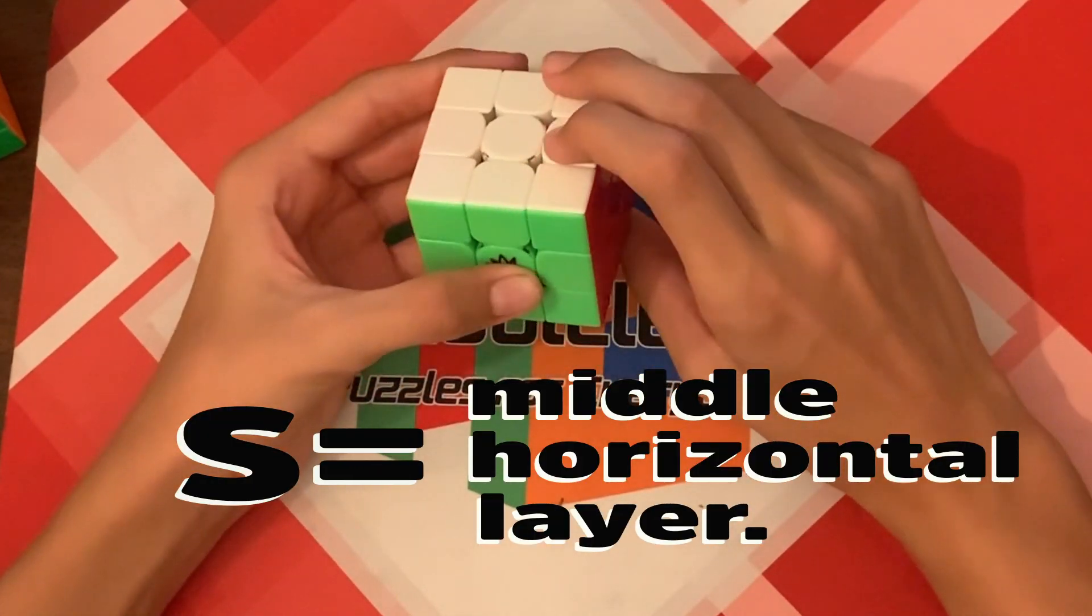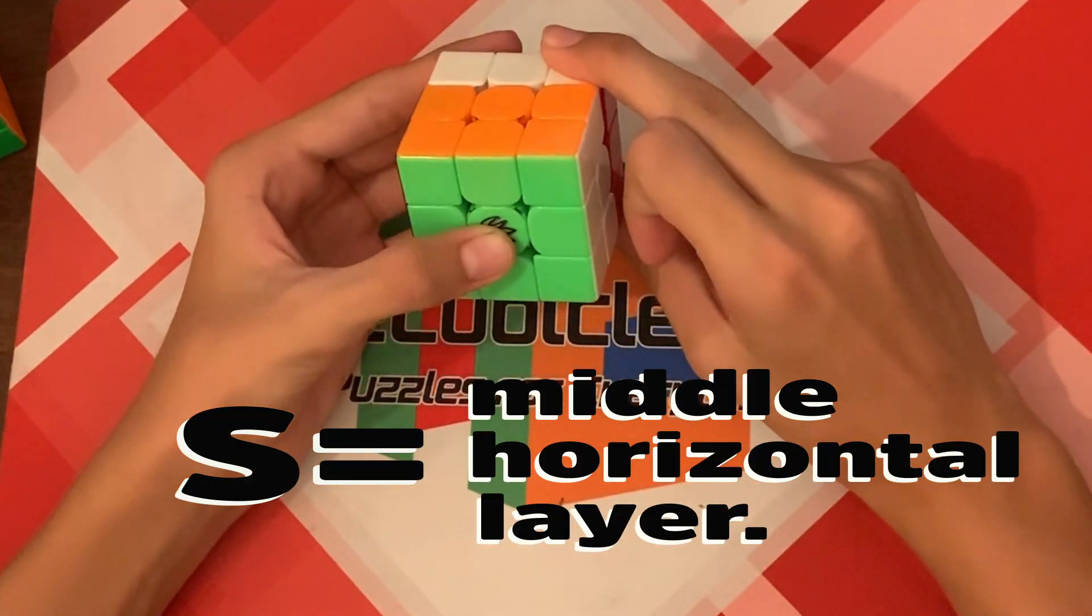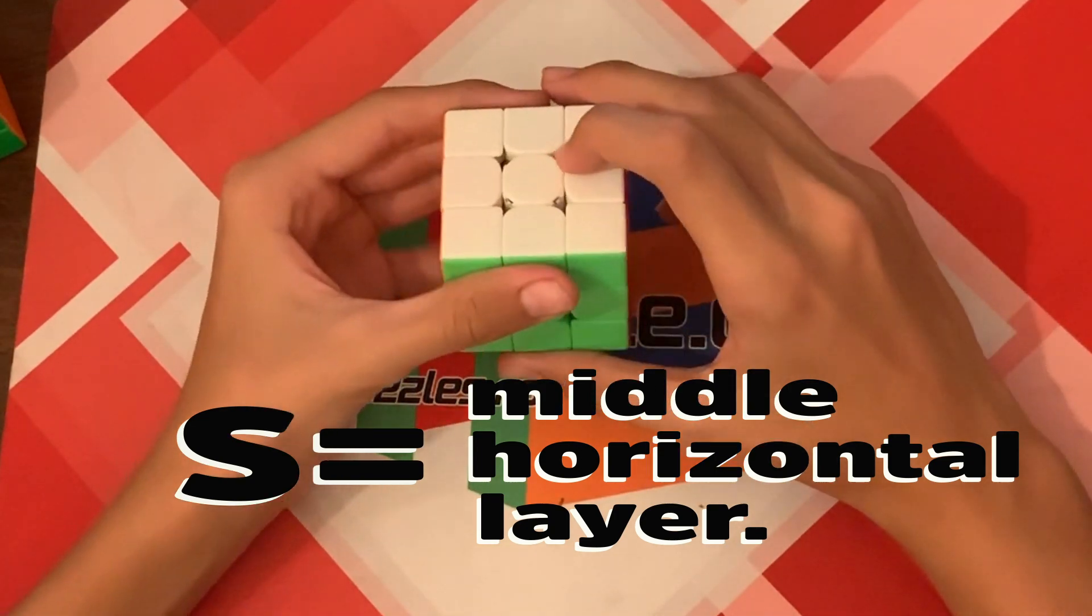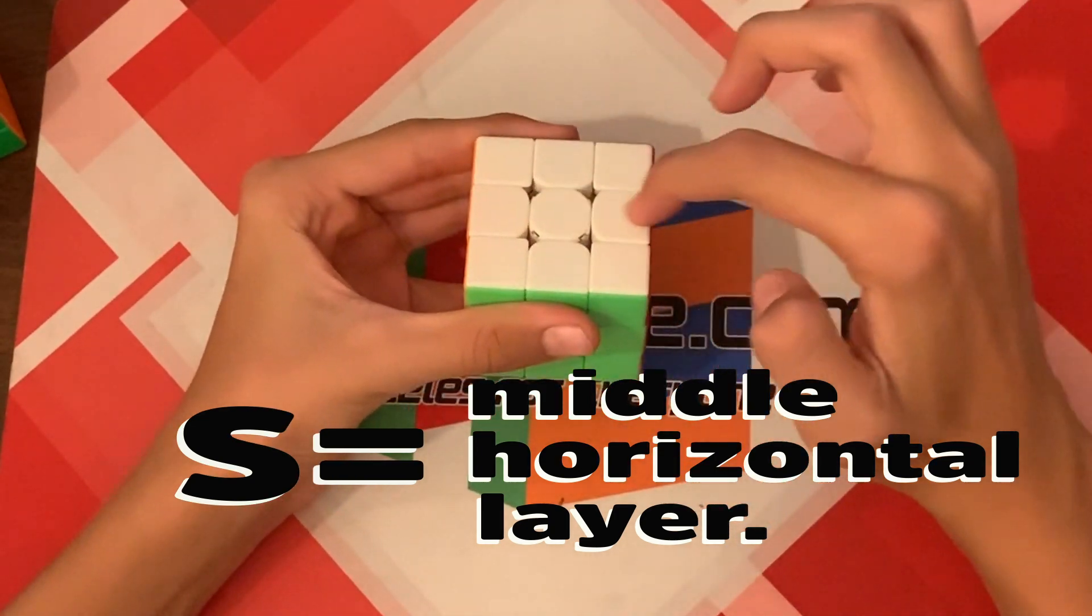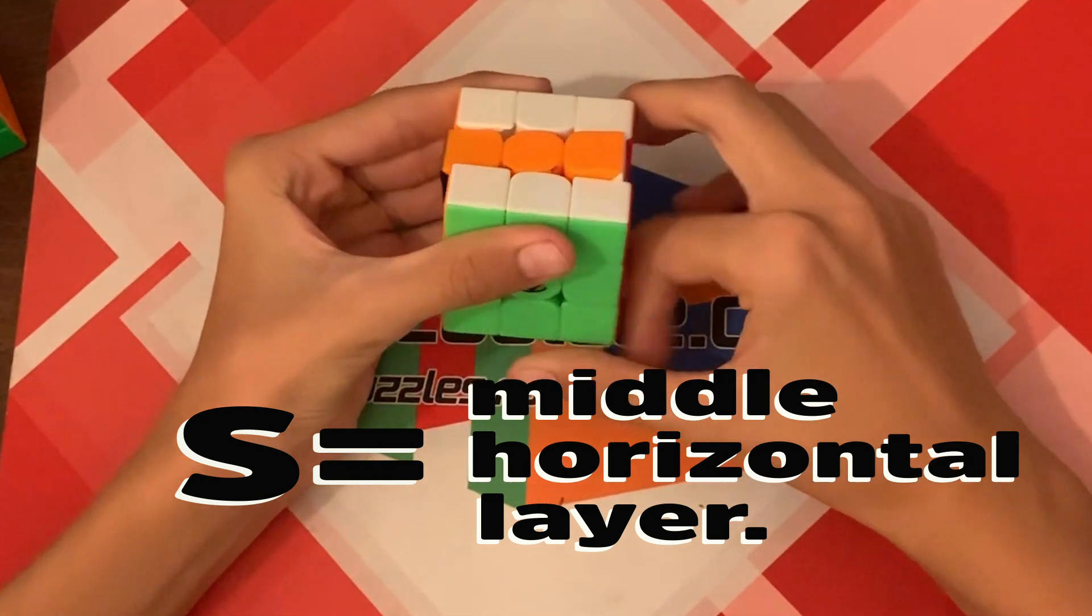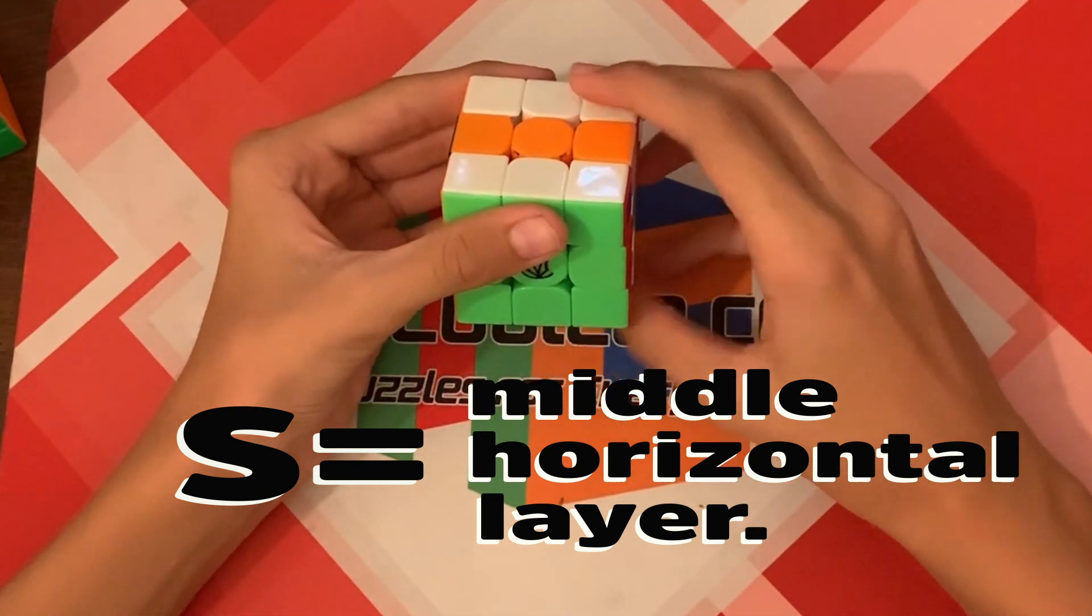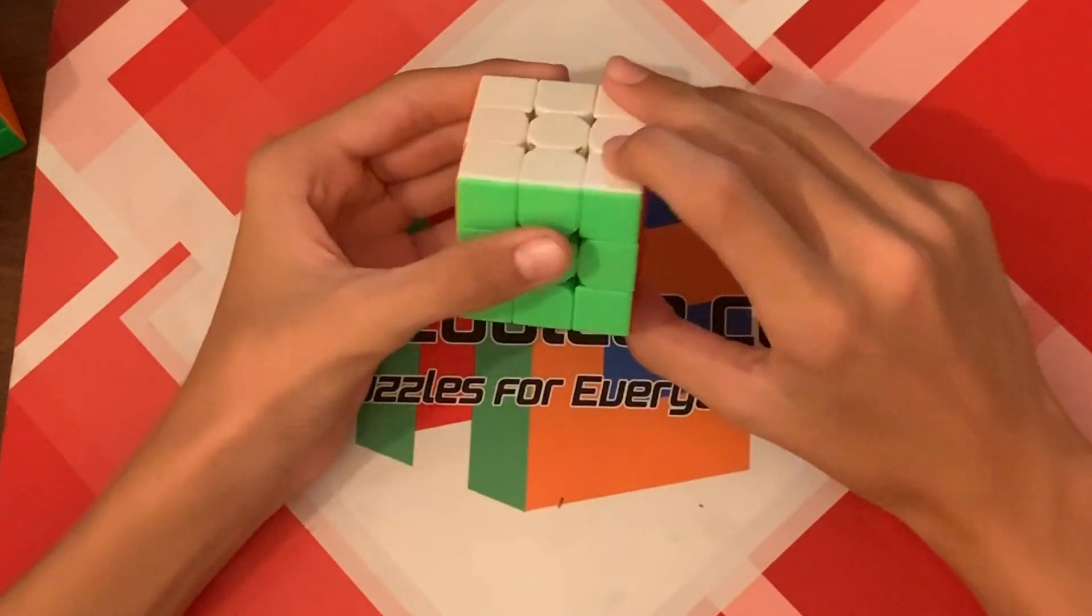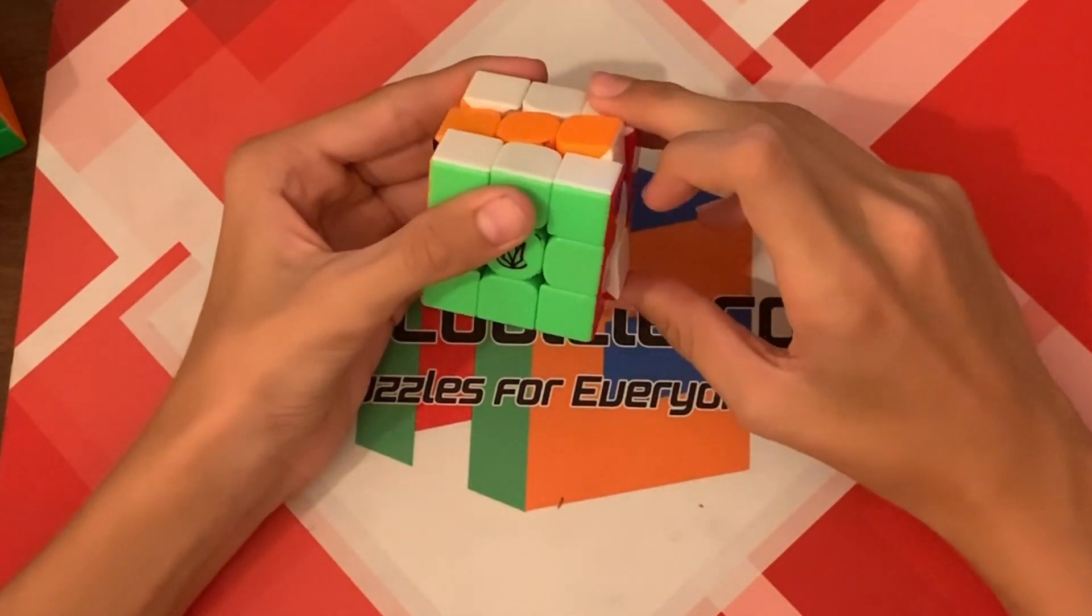What this is, is like the wide F, like this. All you're going to do for S is just turn the middle layer. Like this. So this is S, S prime. S, S prime.